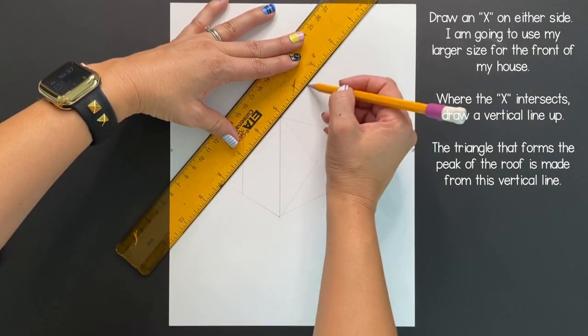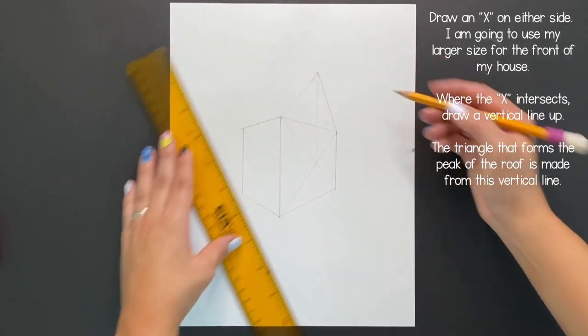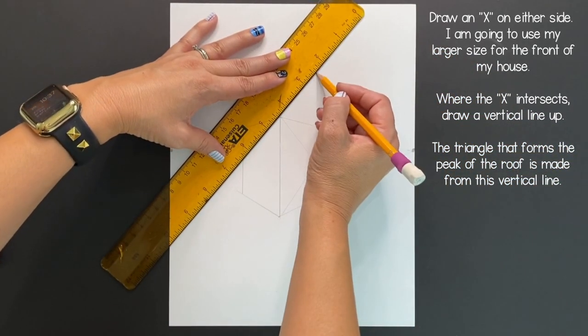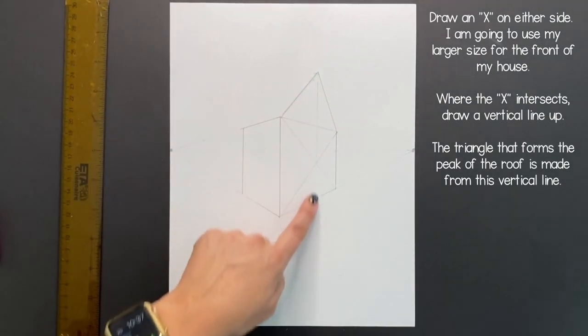So with your ruler you're going to draw one diagonal line that connects to one side of that square to the other side. And now we have the pitch of our roof.